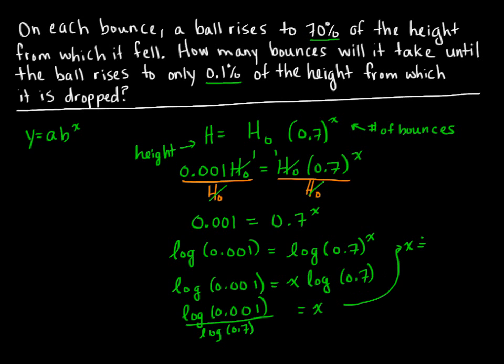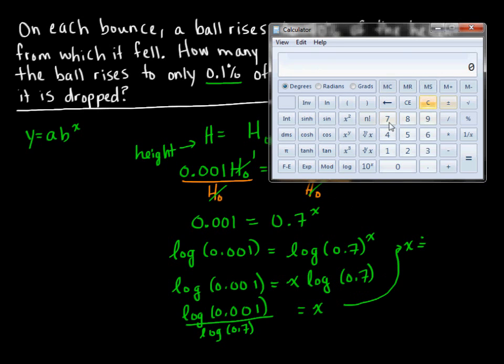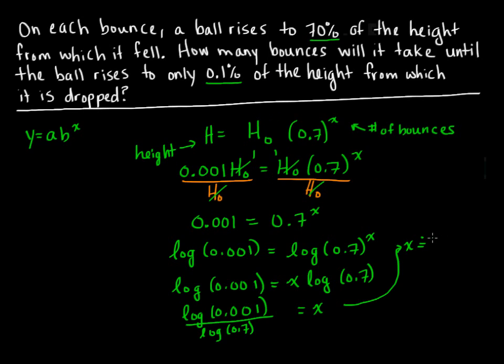If we use the calculator, we want the logarithm of 0.001, and we're going to divide by logarithm of 0.7. And we get about 19.37, which means that about 19 bounces are required.